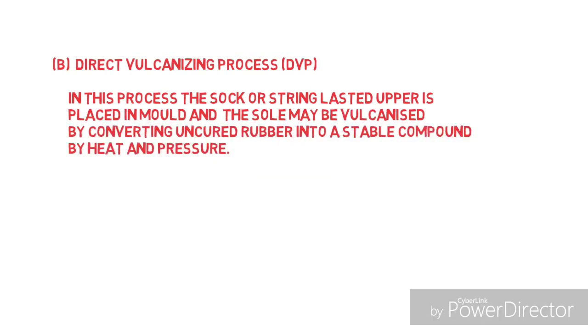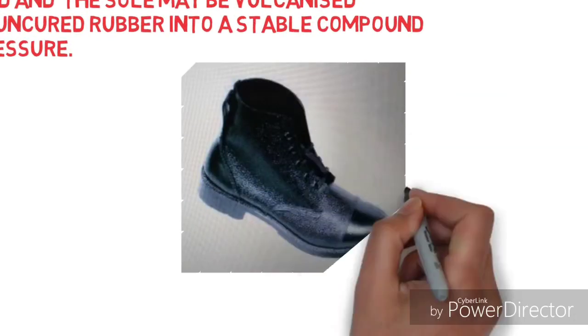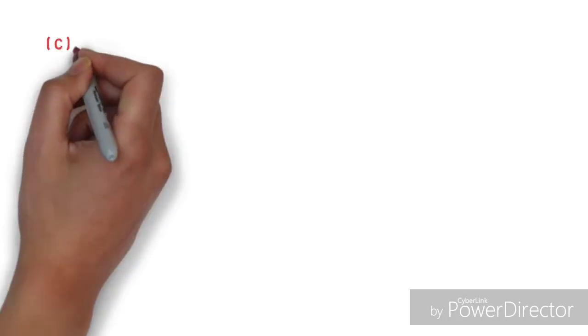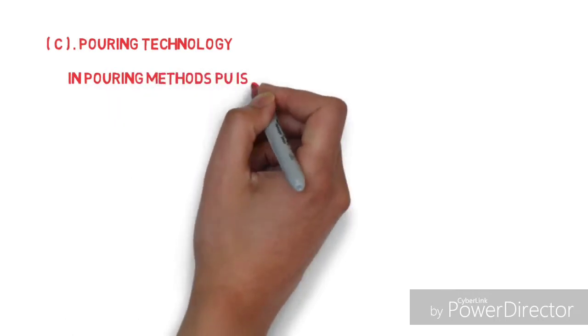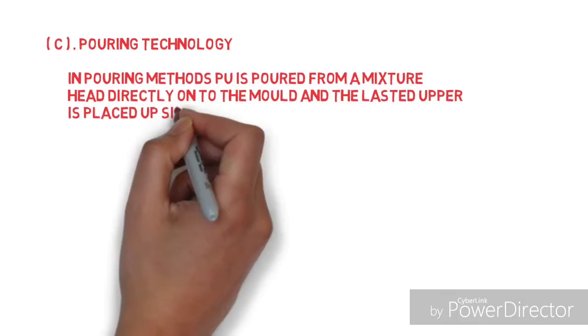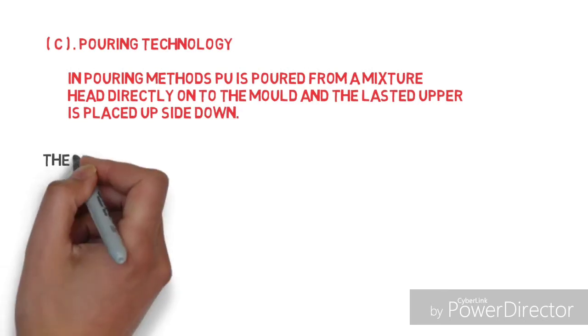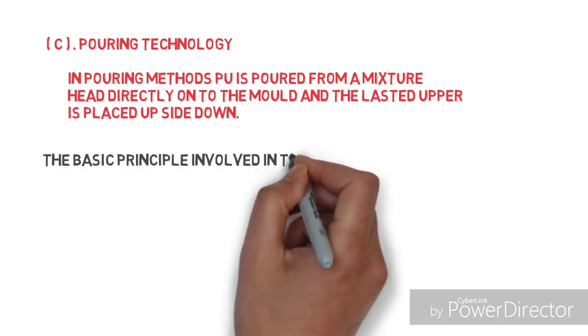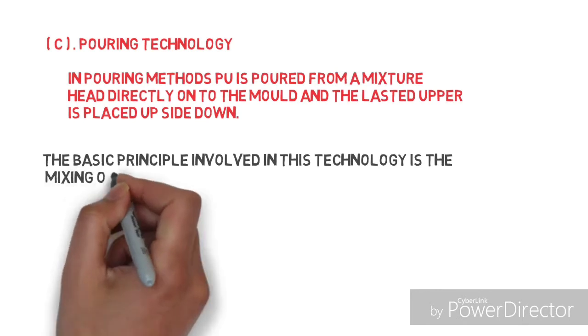Pouring technology: In pouring technology, PU is poured from a mixture head directly onto the mold and the lasted upper is placed upside down. The basic principle behind PU technology is mixing up two liquid chemicals: oleol and isocyanate.